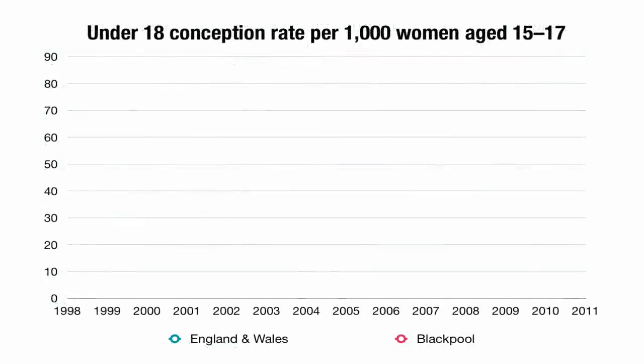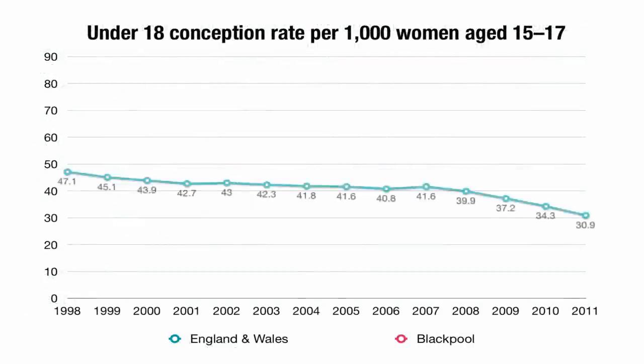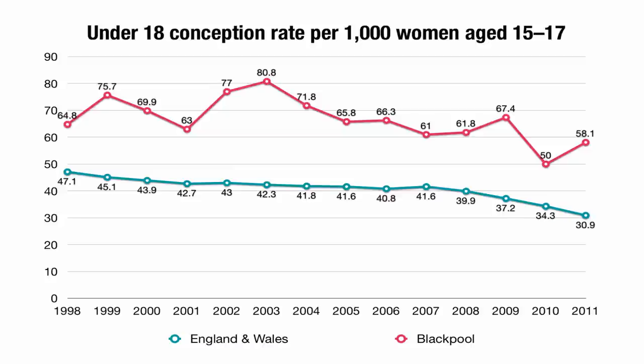It's interesting to see how the under-18 conception rate has been changing. The rate in England and Wales has decreased enormously — from 47.1 in 1998 to 30.9 in 2011. In Blackpool it's been much higher with a lot more variation, going up and down, but also decreasing on the whole. That's not surprising because we're dealing with a smaller number of under-18 conceptions, so there's more random variation. Both rates have gone down, and drawing a line of best fit shows both sloping downward, though we should be careful assuming the trend is linear.